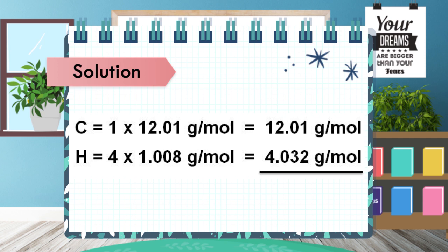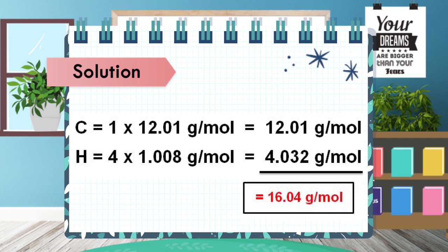After getting the atomic mass of both elements, let's compute for the molar mass by adding their atomic masses. The atomic mass of carbon, 12.01 grams per mole, is added to the atomic mass of hydrogen, 4.032 grams per mole. Therefore, the molar mass of methane is 16.04 grams per mole.